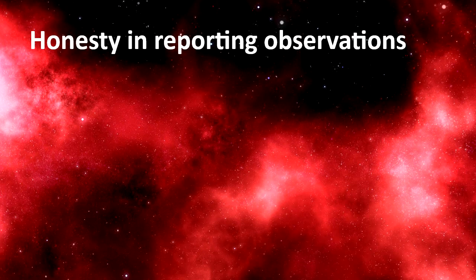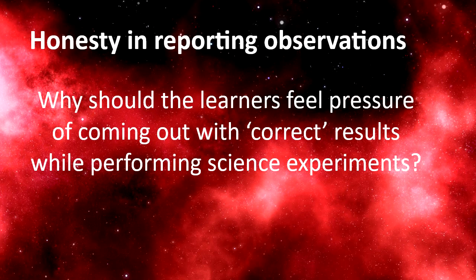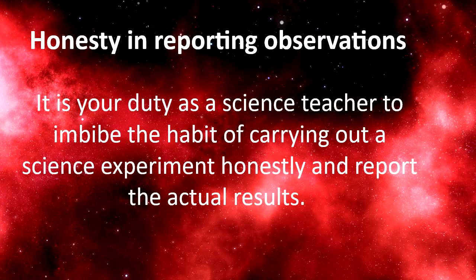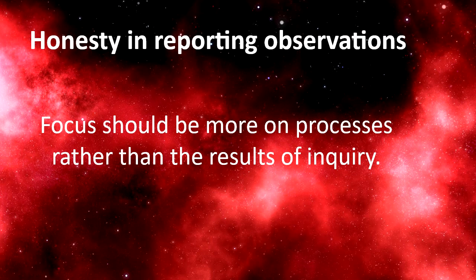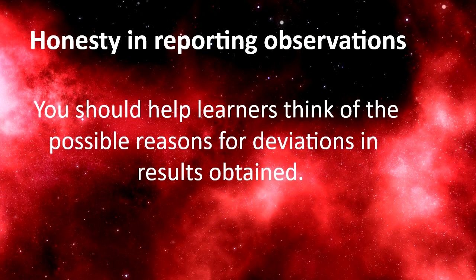You also need to teach your students to develop honesty in reporting observations. A person with honesty never does science experiments under pressure of proving something right. Learners should not feel pressure of coming out with the correct result while performing science experiments. It is your duty as a science teacher to imbibe the habit of carrying out science experiments with honesty and reporting the actual result — focus more on the process rather than the result. If there is any deviation or discrepancy in the result, learners should not be penalized; rather, they should be encouraged to identify where the mistake was made and what the possible reasons for that deviation are.